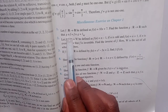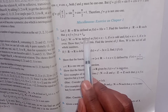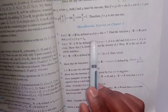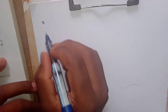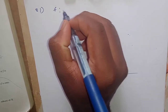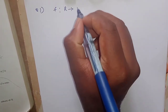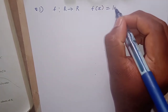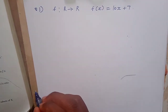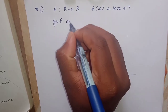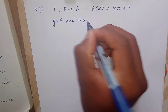Such that g∘f is equal to f∘g is equal to I_R (identity on R). This condition is nothing but for checking whether the function is invertible. For finding g∘f and f∘g, you have to find g of x.